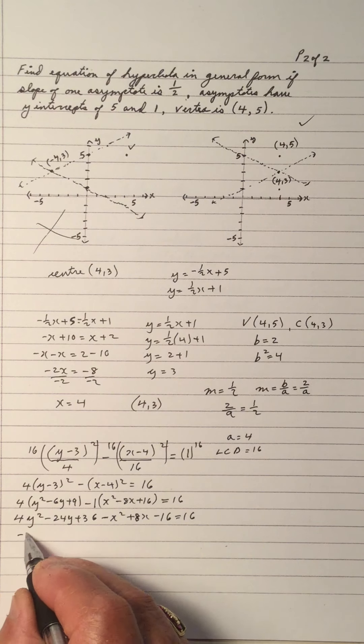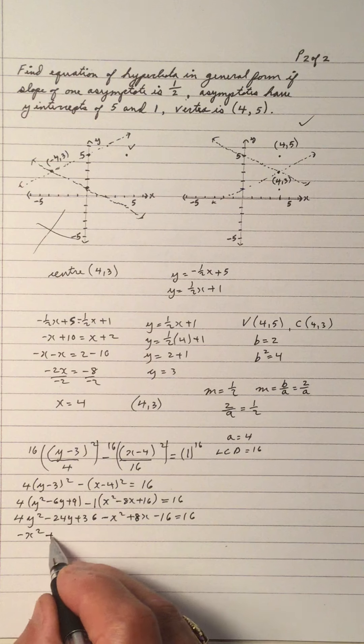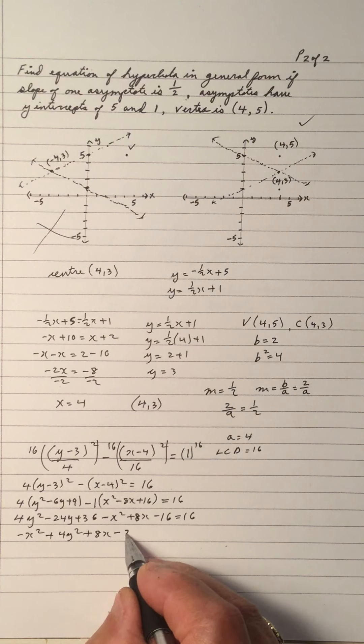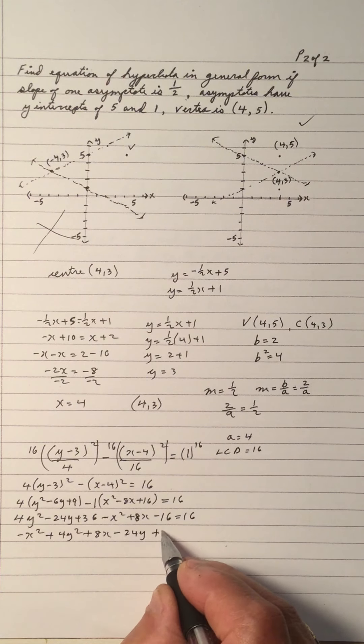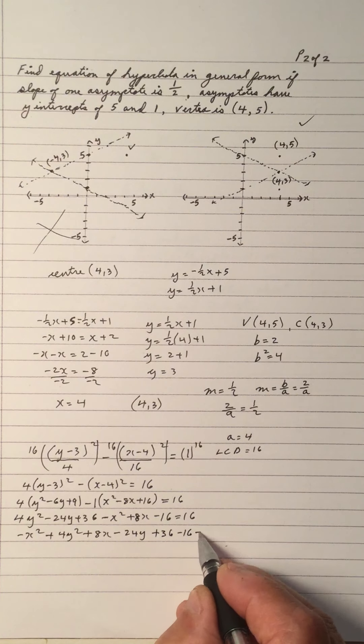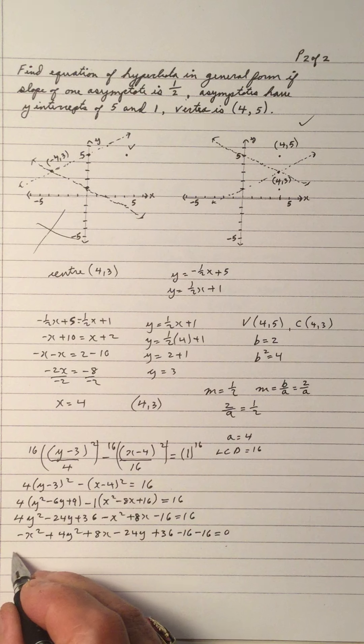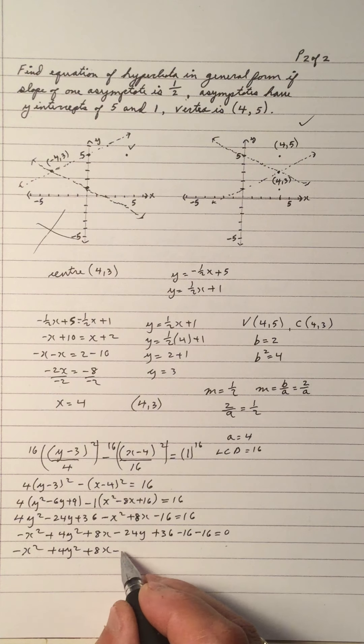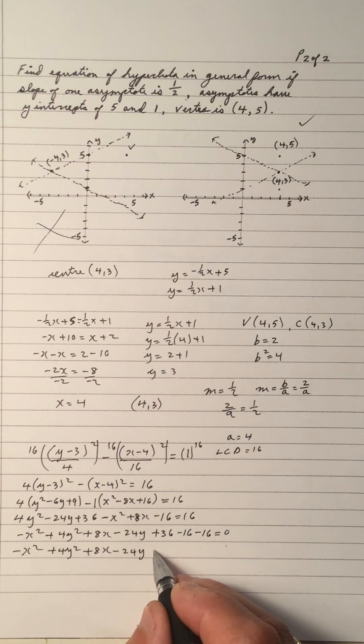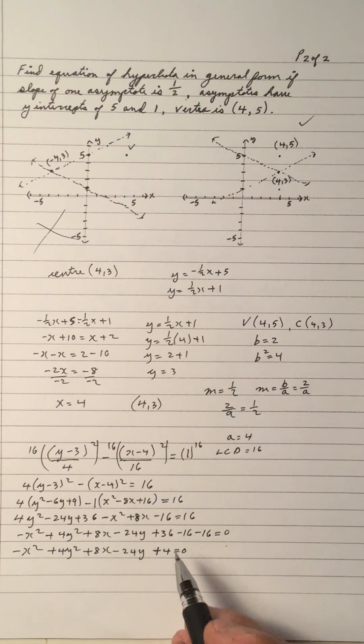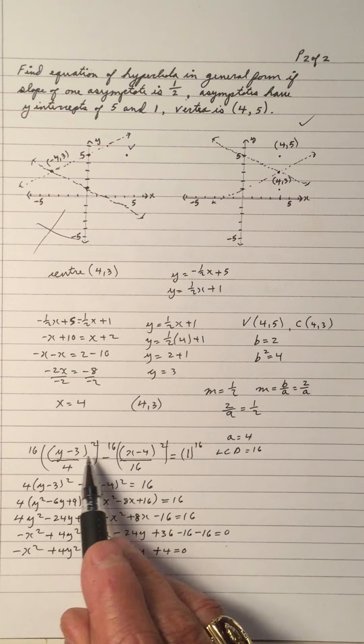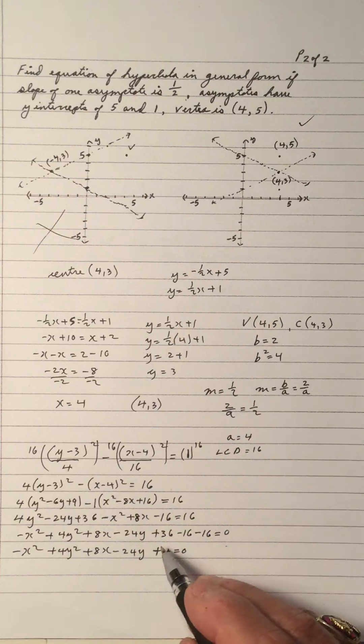And in general form, we put the x first, the x squared first, then the y squared. Then the x, and then the y, and then the constants. 36 minus 16 minus 16, equals 0. So we have negative x squared plus 4y squared plus 8x minus 24y plus 4 equals 0. And we have the equation in general form. This is the transformational form right here. And as you can see, without the 16s, because we're trying to eliminate the fractions, there's the general form.